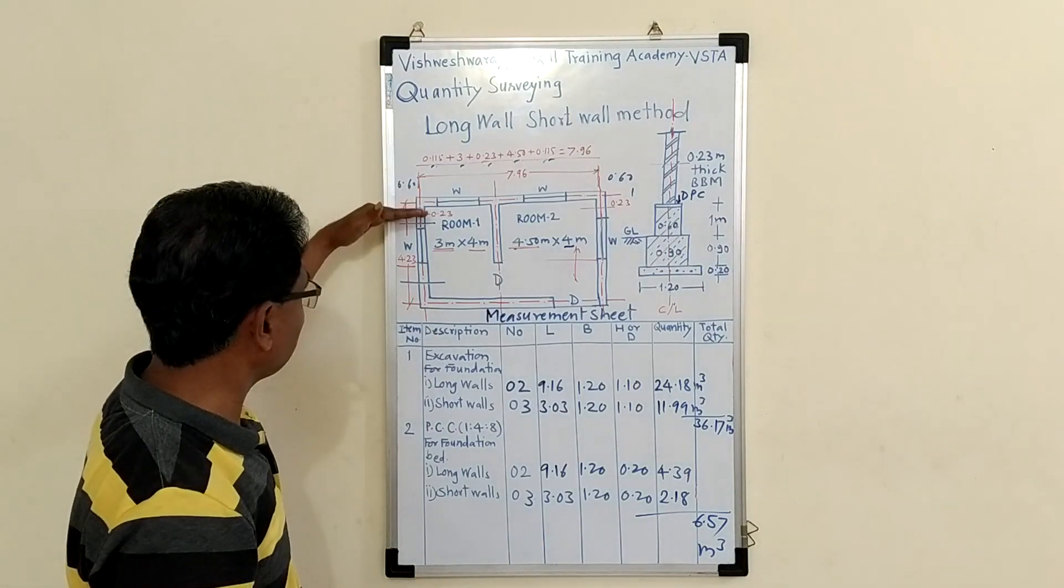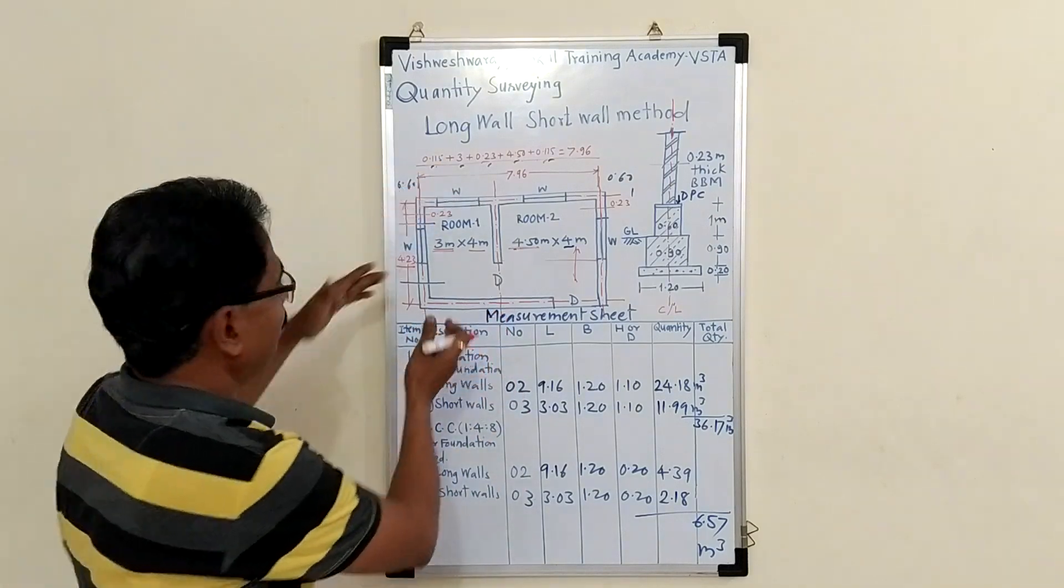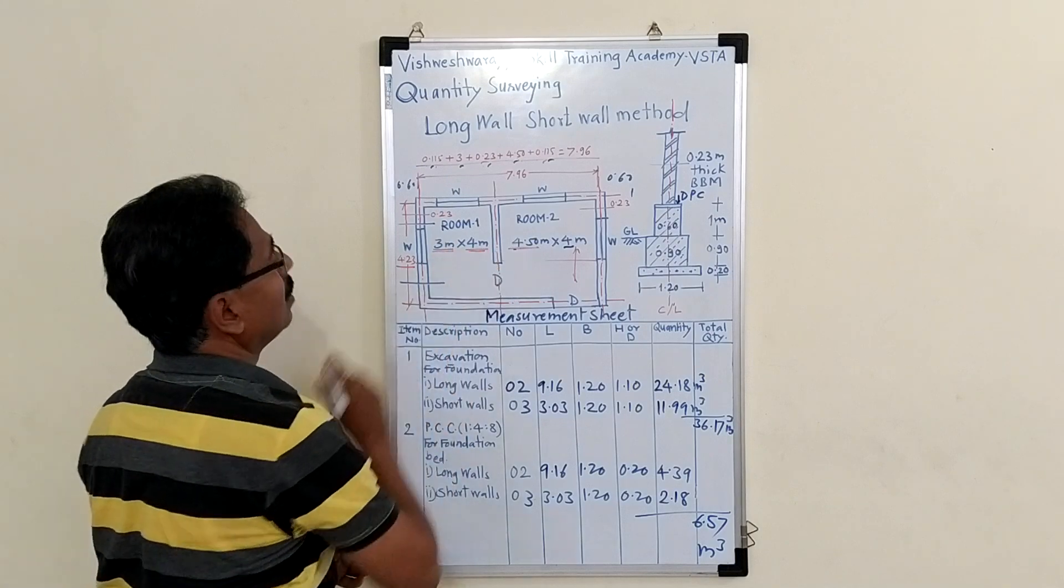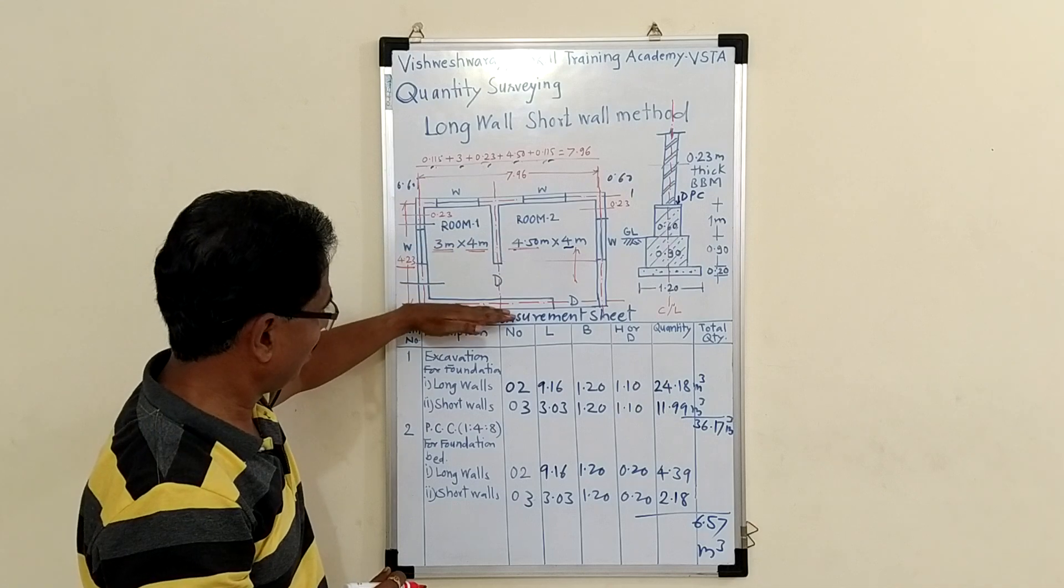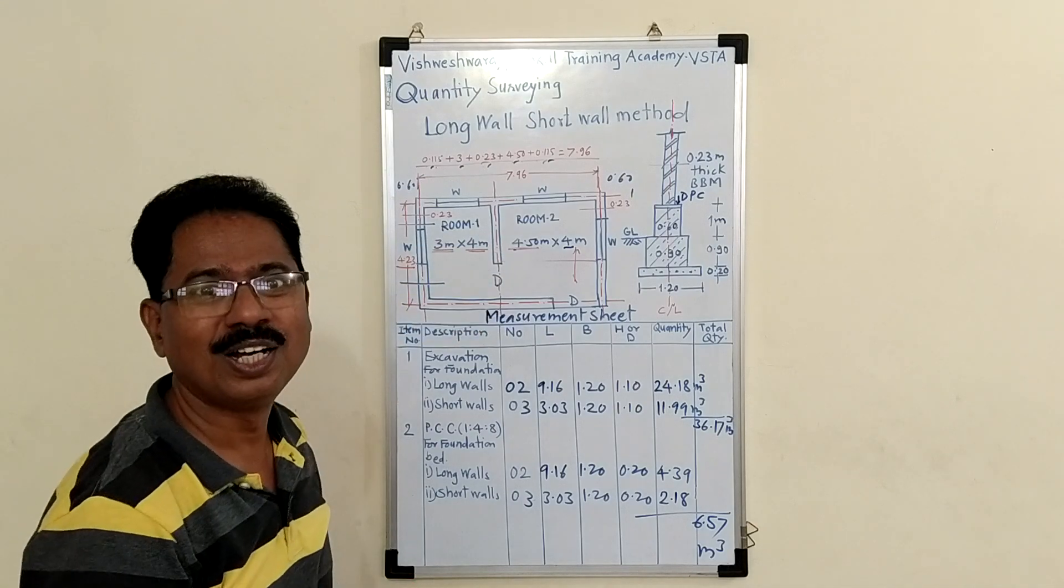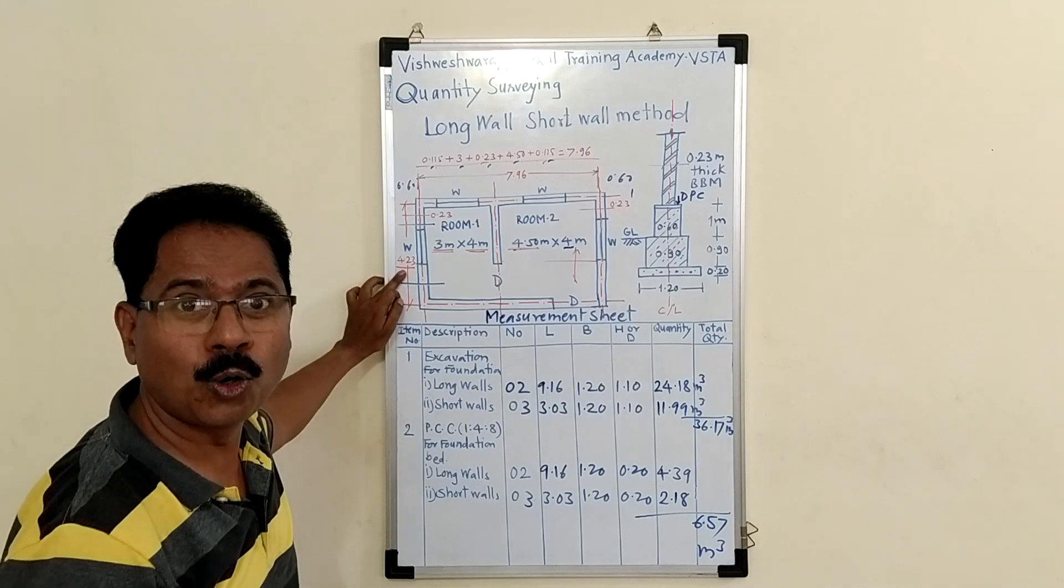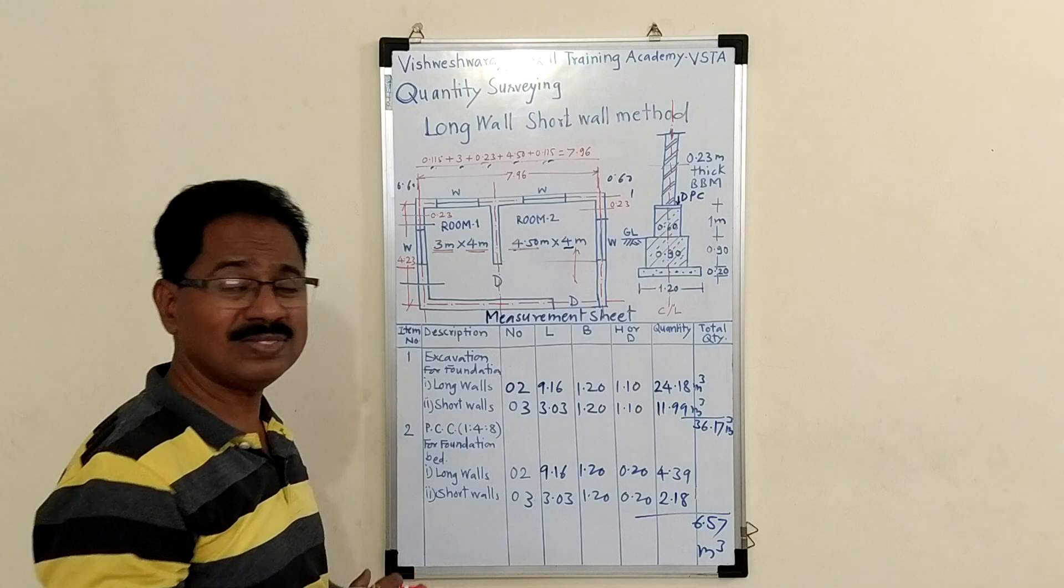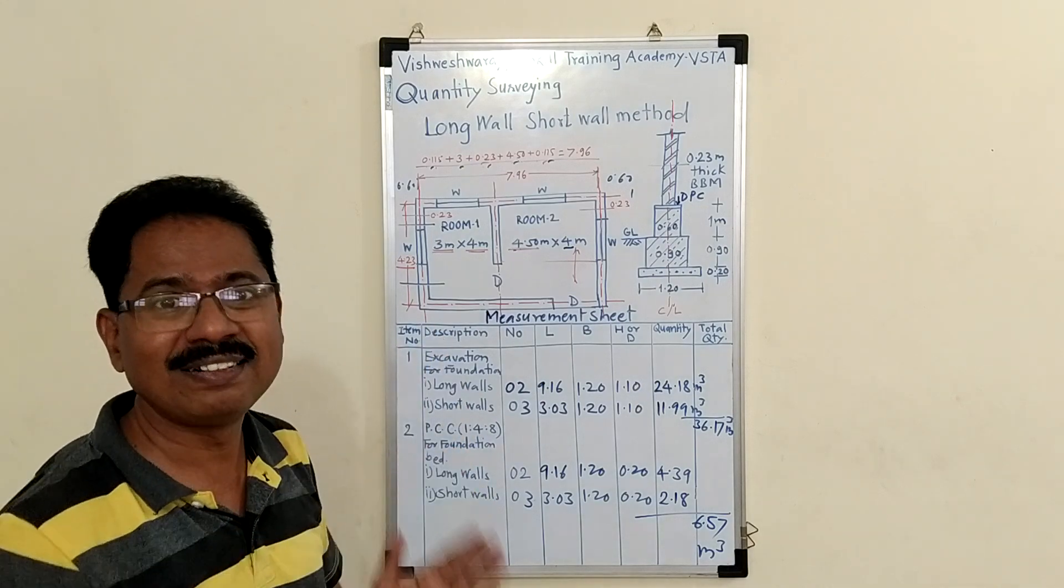Now, you determine the center line length of short wall. This is a long wall, this is a short wall. So, 4 meter plus half wall and half wall means 0.25 meter. So, it comes 4.23 meter. So, in this way you calculate the center line length.